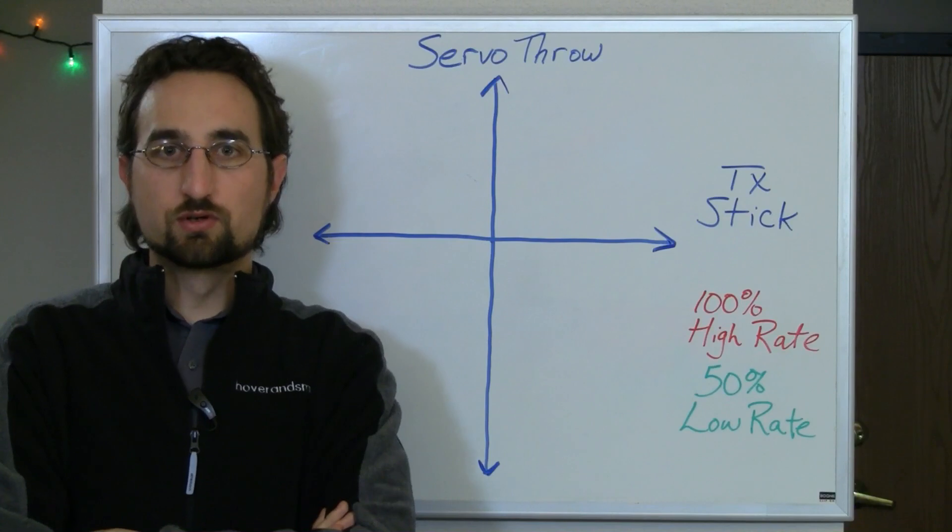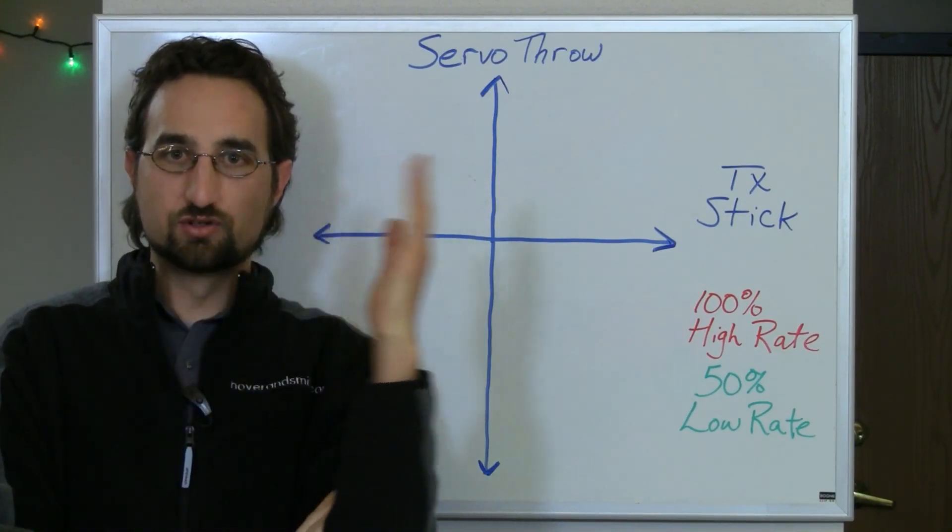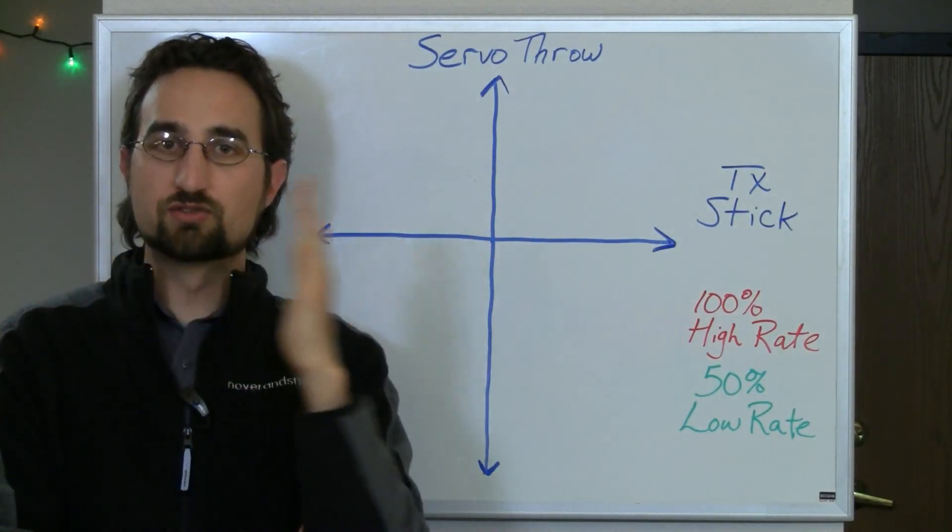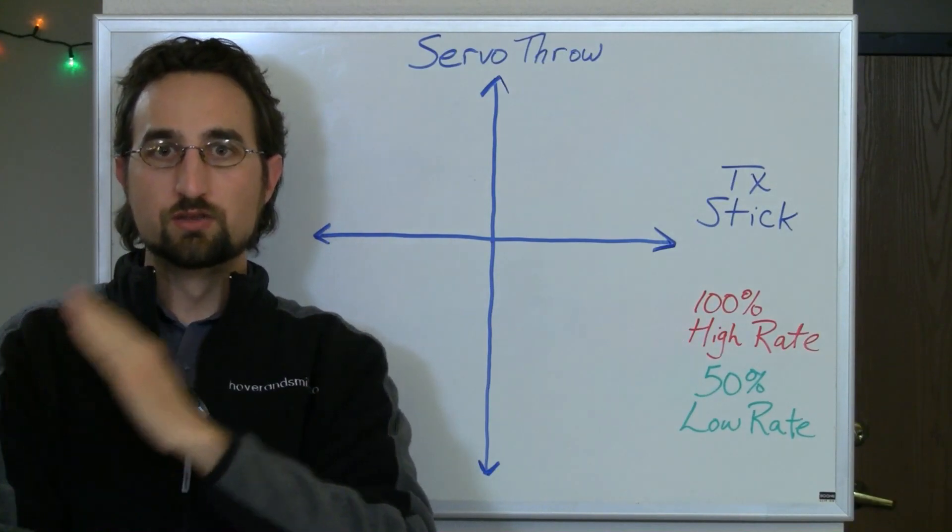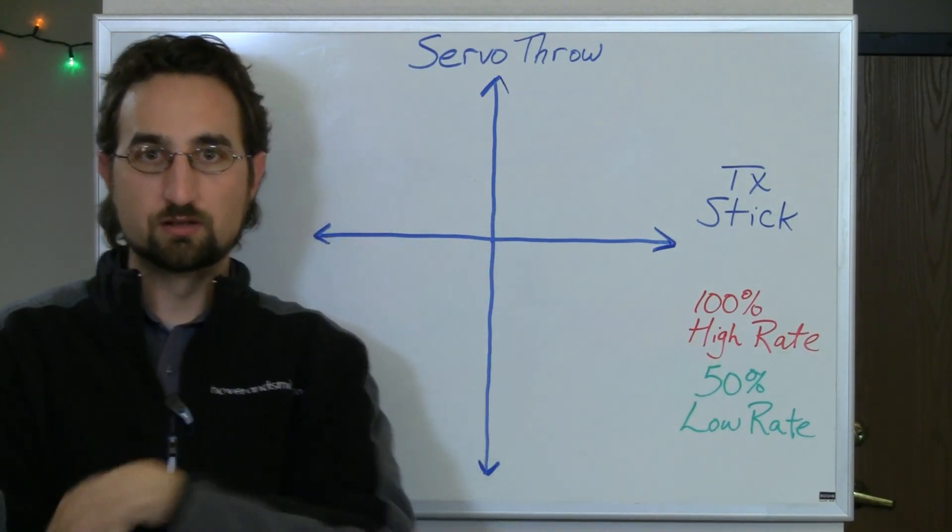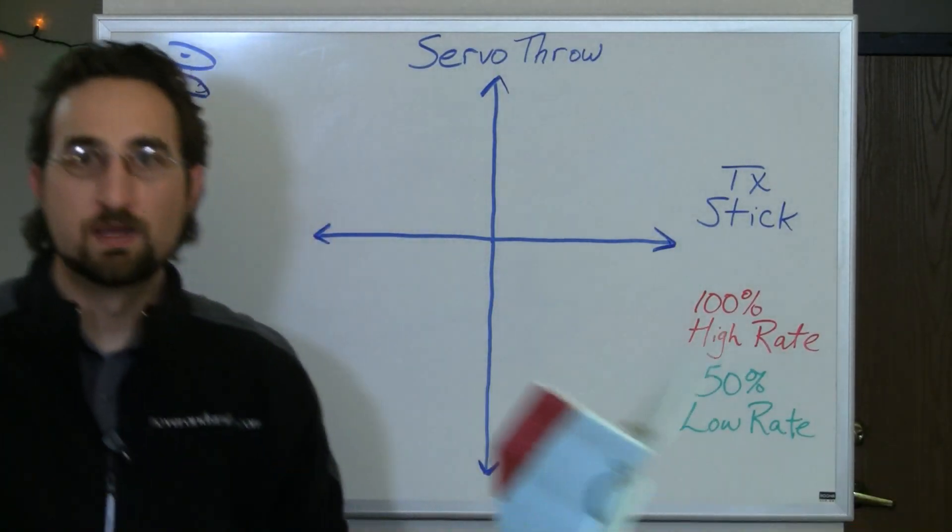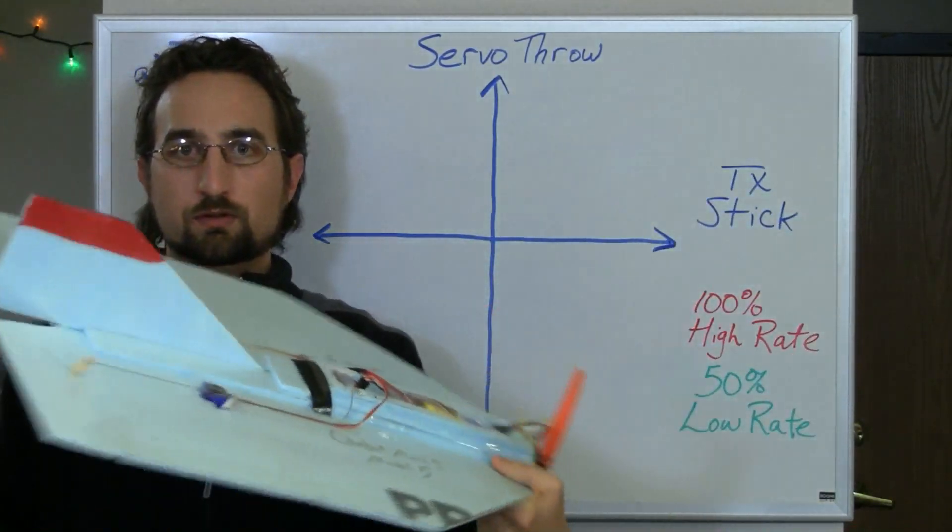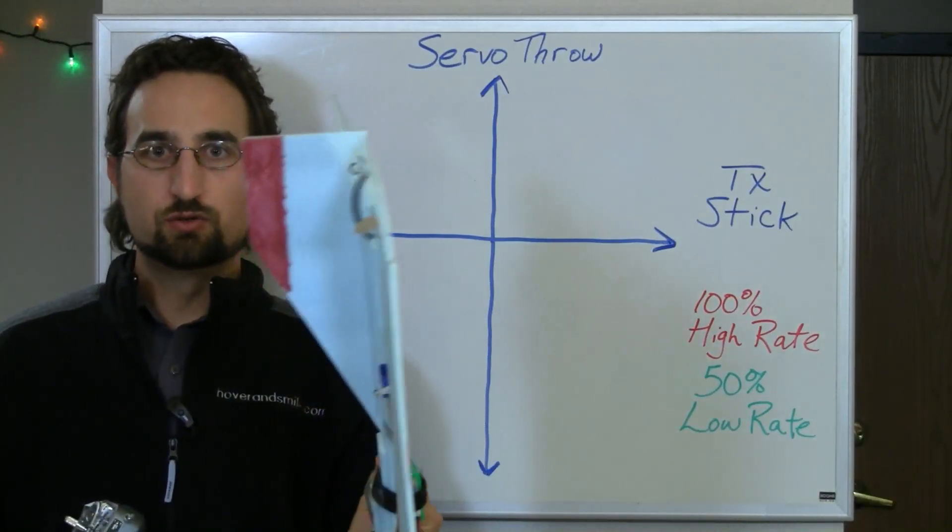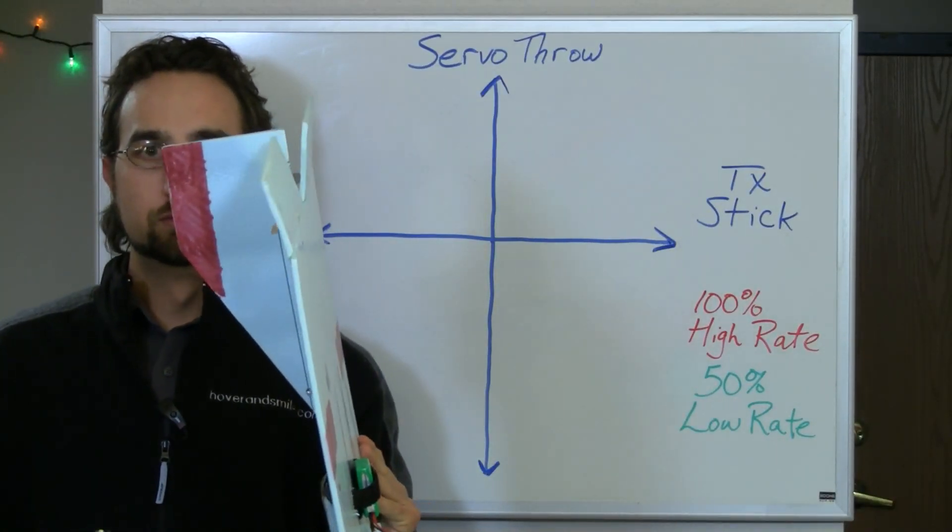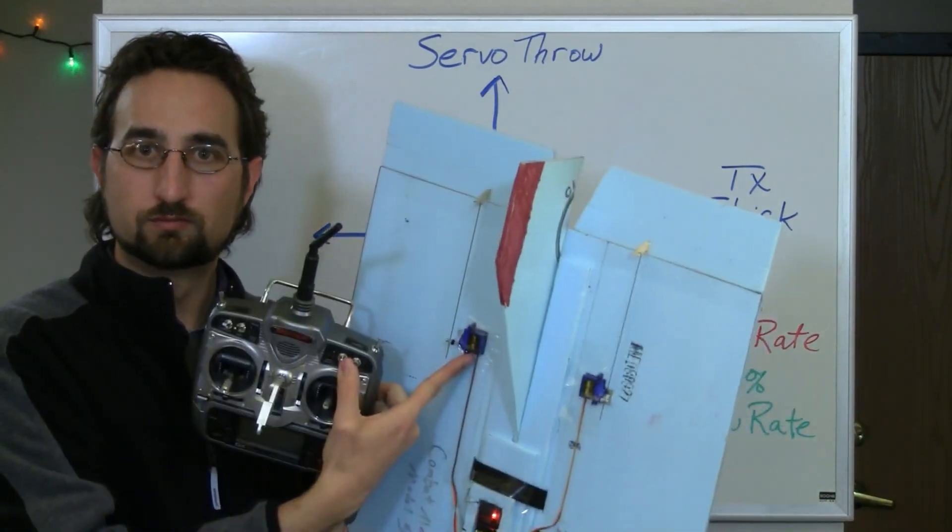Each of those servos has what's called servo throw. That is the distance that that servo arm can move, and when that servo arm moves through commands from your transmitter, that's what's changing the deflection of your control surfaces or the angle of your swash plate. For example, we have a very simple combat foamy flyer right here. As I move my transmitter stick, you can see that the control surfaces also move.